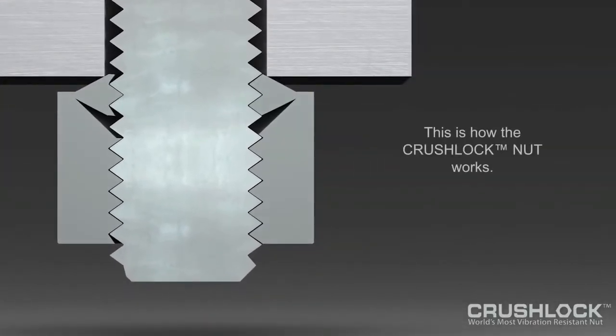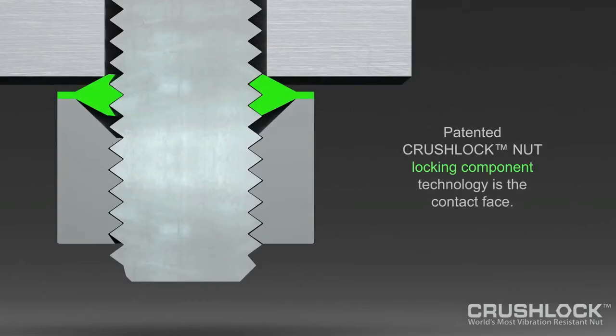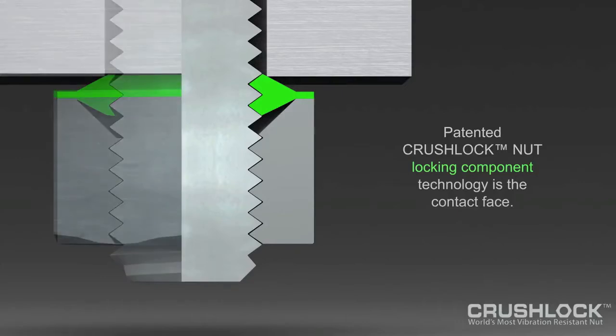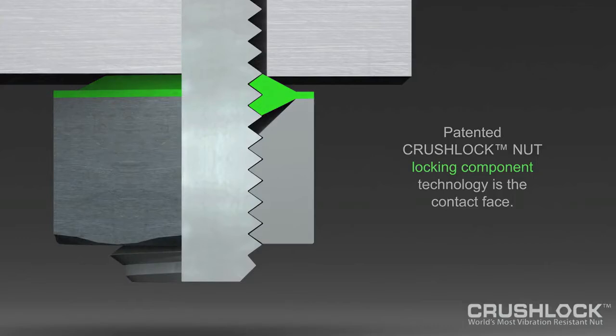the vast majority of nut stress is on its first two threads. It is these first two threads on the flying saucer that are pressed into the body of the Crushlock Permanent Nut during installation, creating permanent internal pressure.